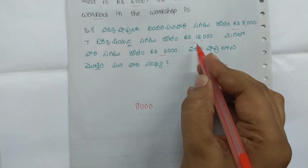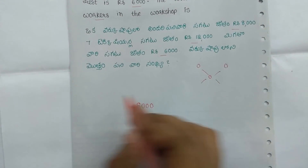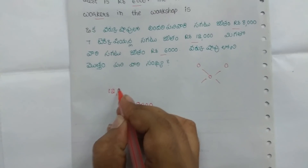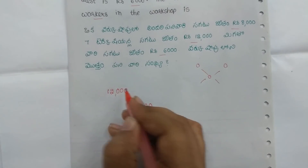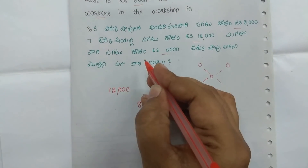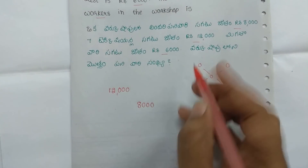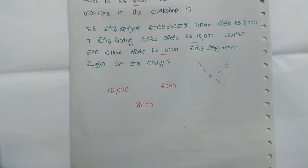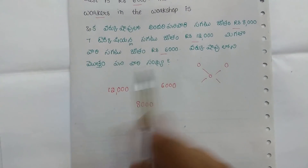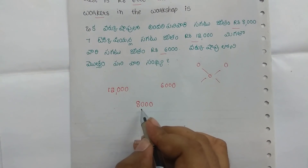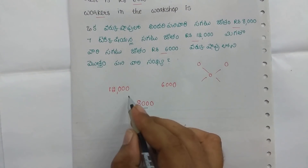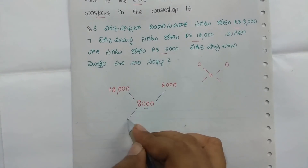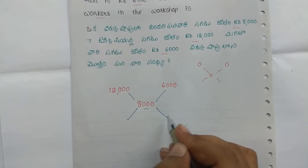We'll see 9,000, 10,000. So 80,000, then 60,000.